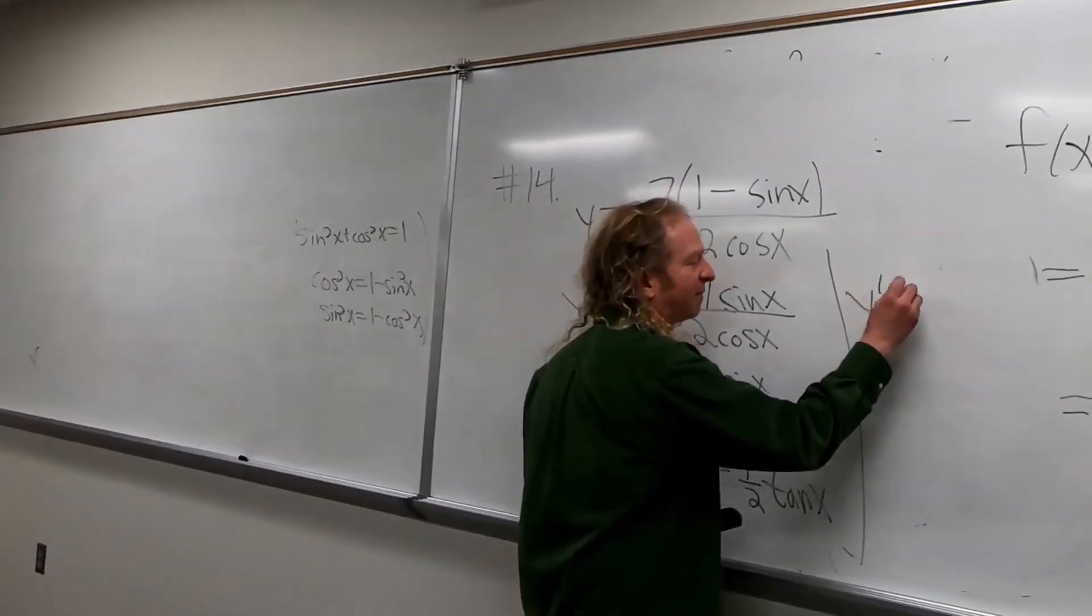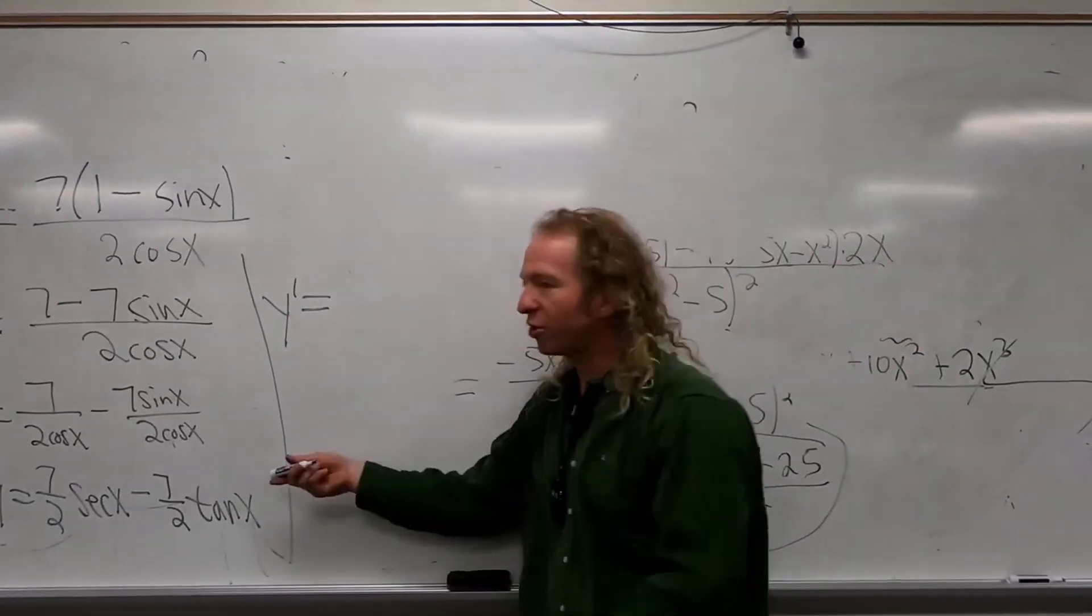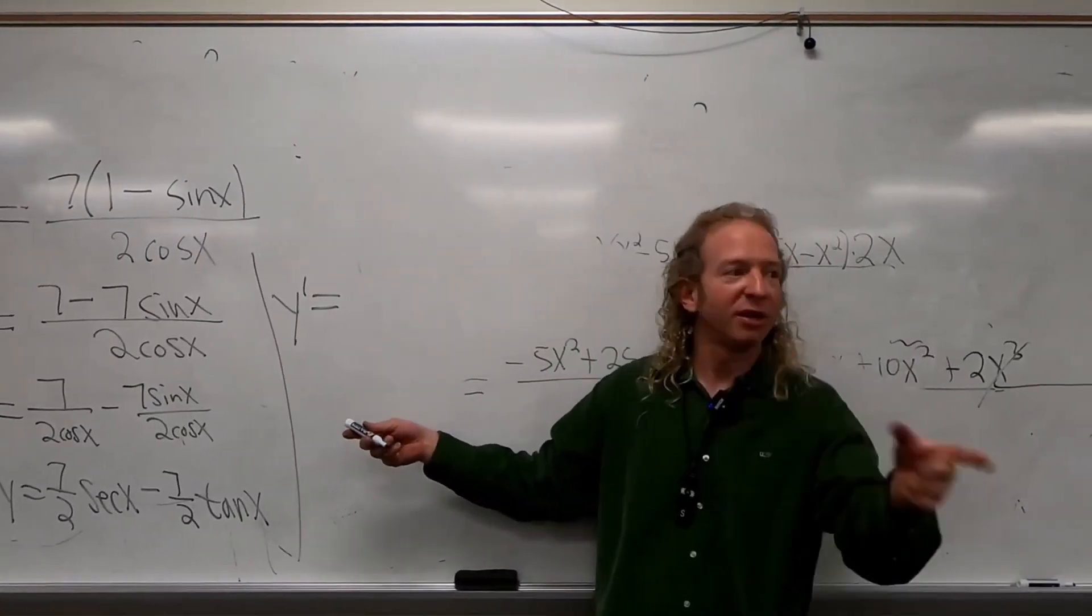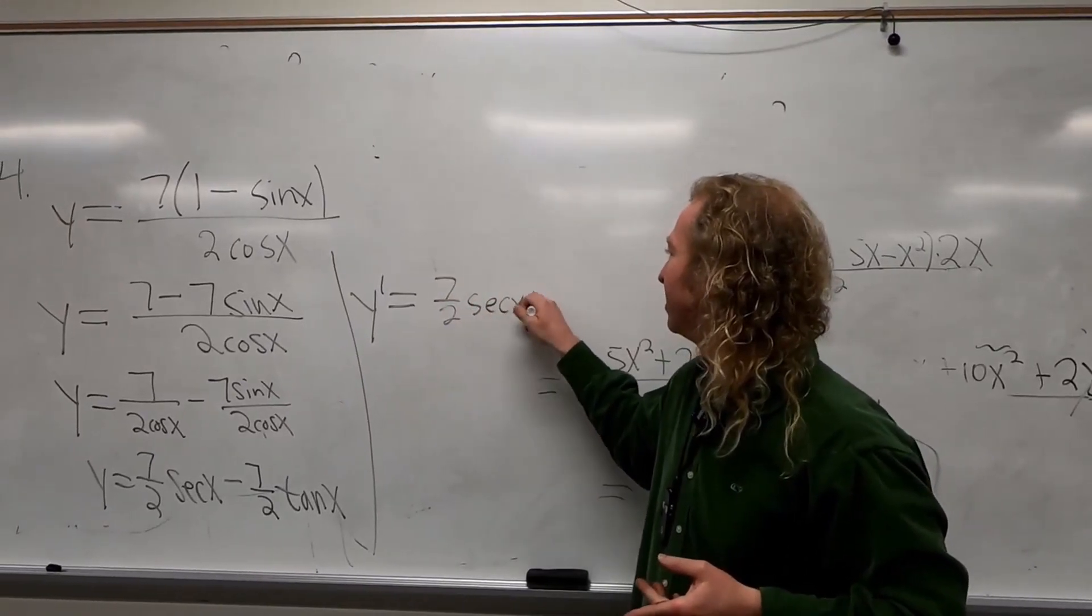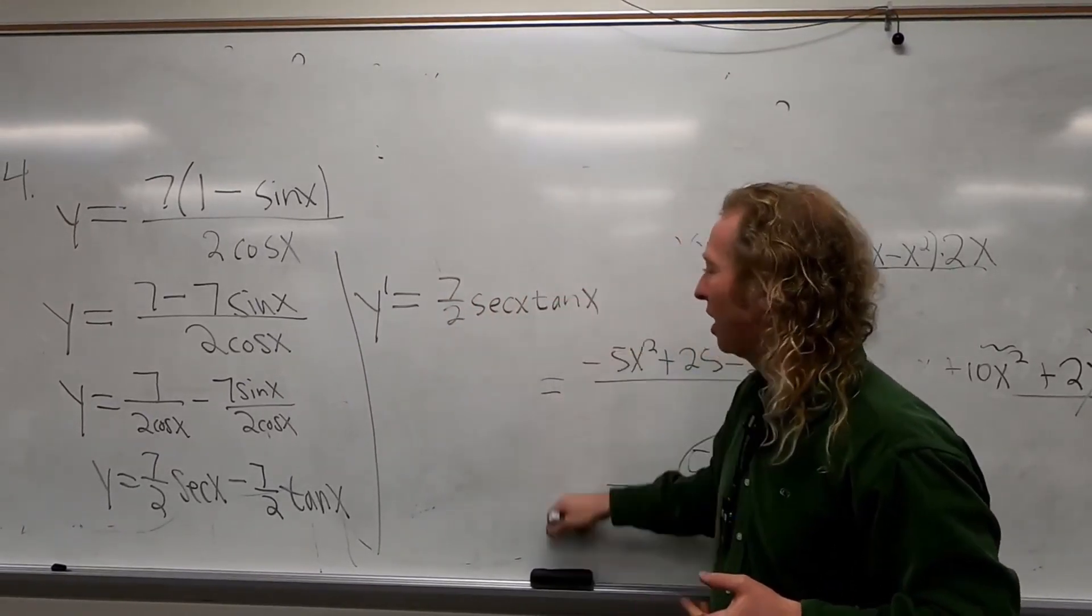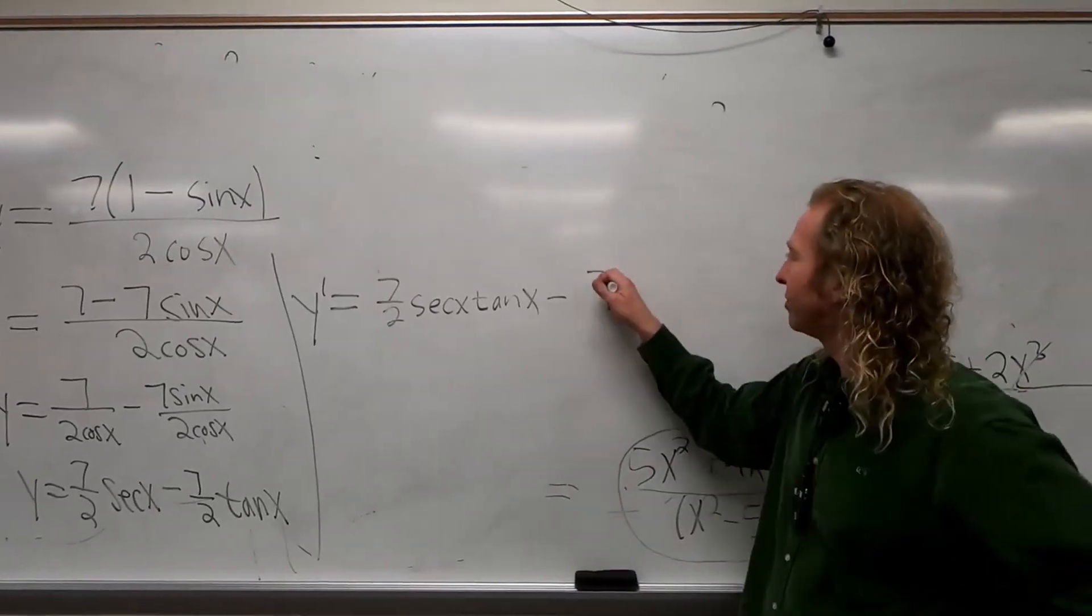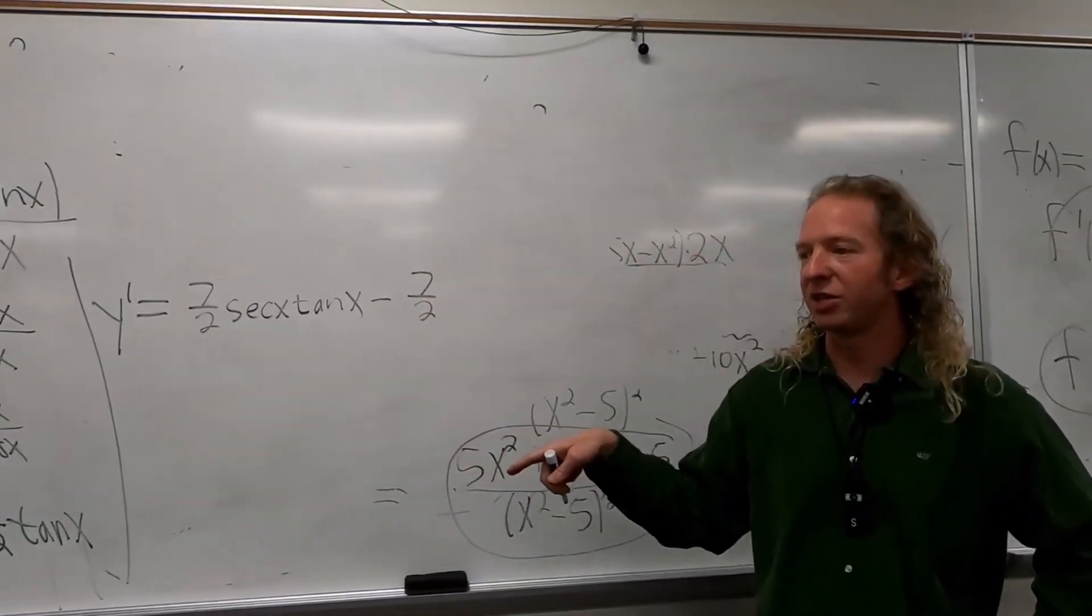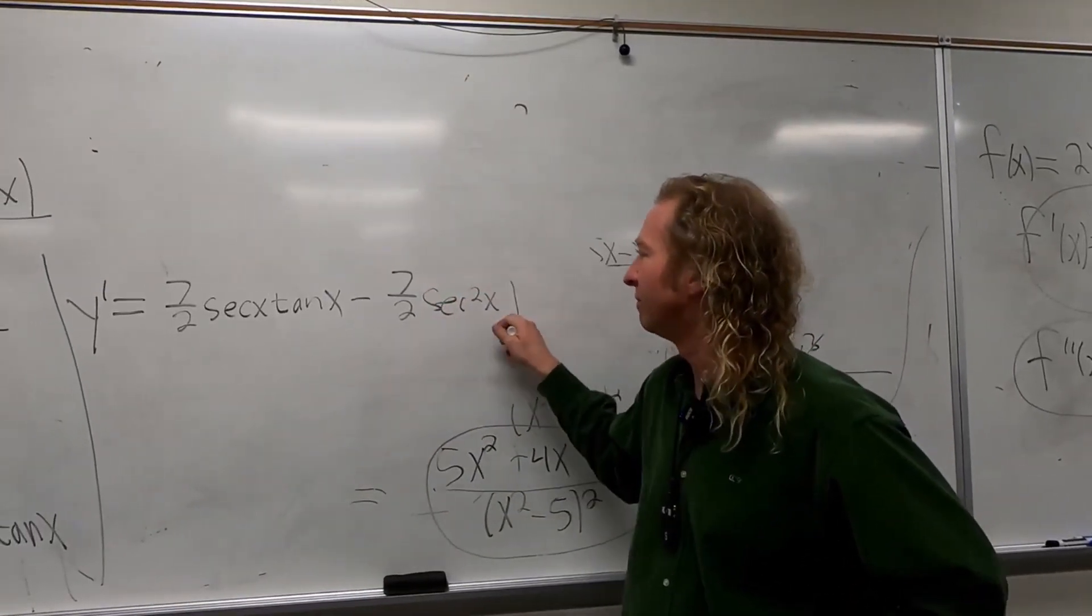So y prime. What's the derivative of secant? Do you all remember? Secant tangent. So secant tangent. And so minus. And then 7 halves. And then what's the derivative of tangent? Secant squared. Good. That's it.